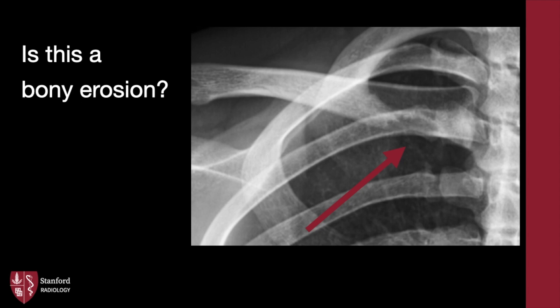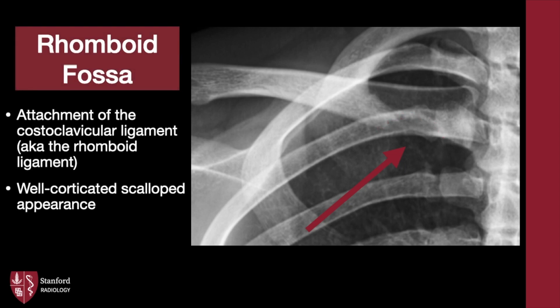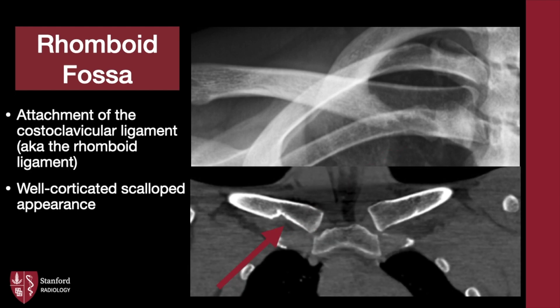First case: is this a bony erosion? The cortical undersurface of the medial clavicle appears irregular. However, note it appears largely well corticated and scalloped. This is the rhomboid fossa, where the costoclavicular or rhomboid ligament attaches. Occasionally, the attachment site has a depressed appearance. Here is a CT companion — note how the variant is not always symmetric.